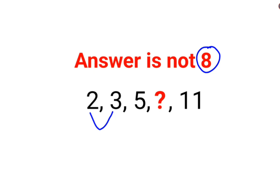Because see, 2, the difference between 2 and 3 is 1. The difference between 3 and 5 is 2. So next difference should have been 3 and then the next difference should have been 4.